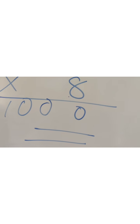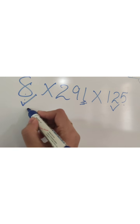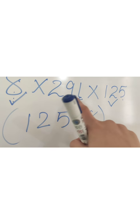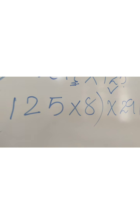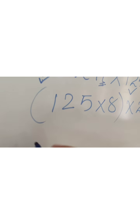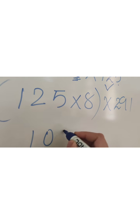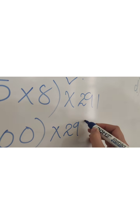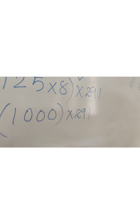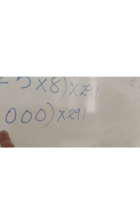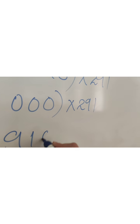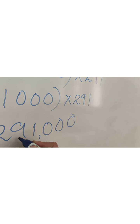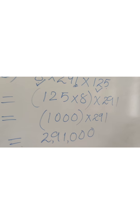So the group is 125 multiplied by 8, and 291 remains as it is. 125×8 = 1000. Now 1000 × 291: since 291×1 = 291, and there are 3 zeros, the answer is 2,91,000.